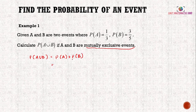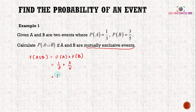We already have P(A) and P(B) in the question, so we substitute into the formula: 1/3 + 3/5, and we get 14/15 as our answer.